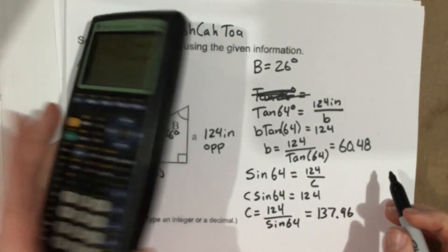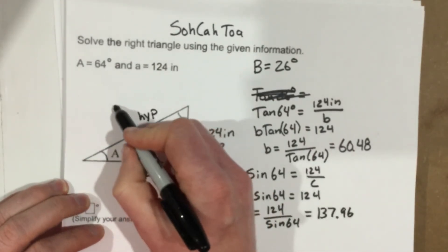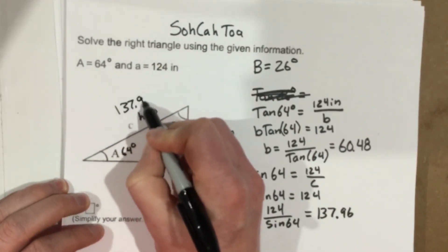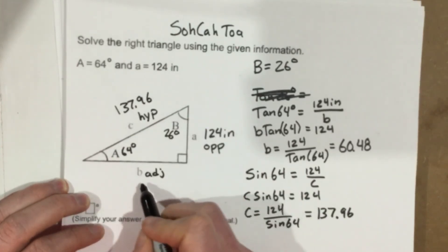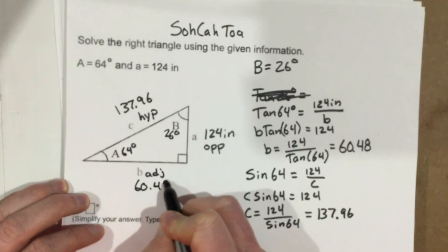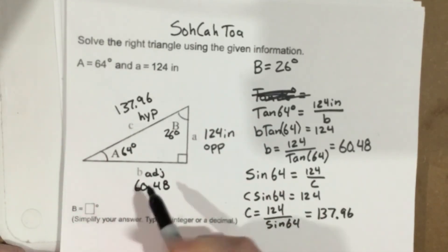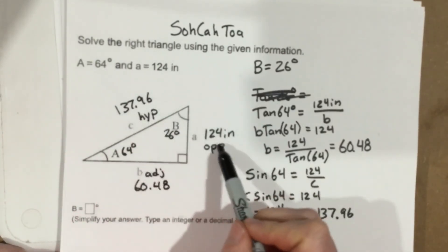So now I know that this part C is 137.96. This, little b, is 60.48, and now I know the whole triangle, and it makes sense because the hypotenuse is the longest side, and it's not ridiculously long.